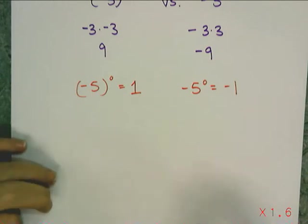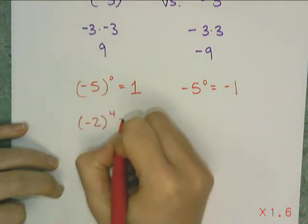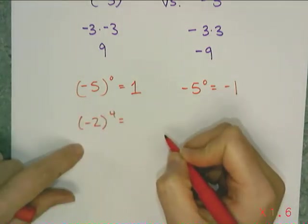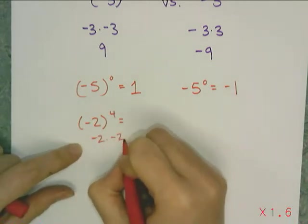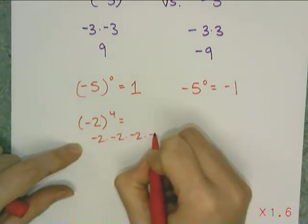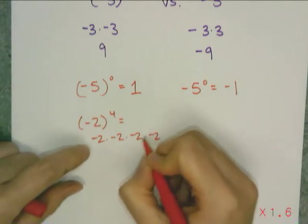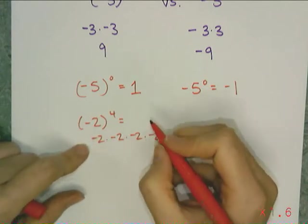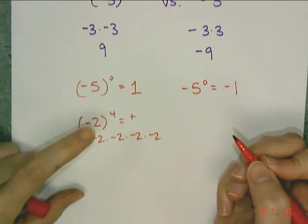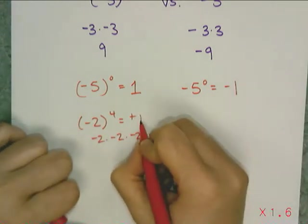And then I can say, well, how about this? What's negative two to the fourth power? Well, that's negative two times negative two times negative two times negative two. And I follow my trick for multiplication. I got four signs that are negative. That means my final answer is positive, and then two, four, eight, 16.